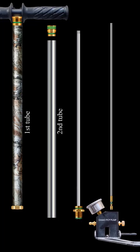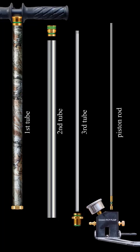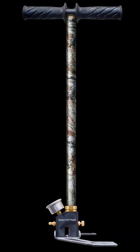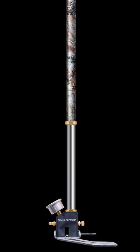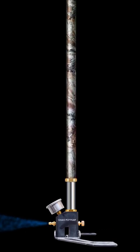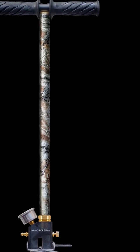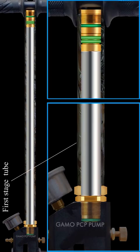A three-stage PCP pump consists of three tubes. There are also three pistons in it. You can see the separate parts of the pump. The pump takes air from the hole in the handle and then releases pressurized air.